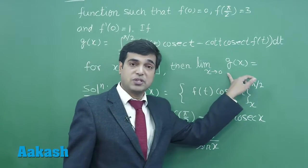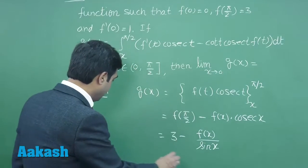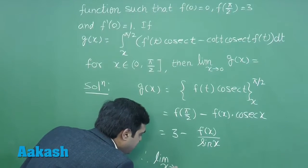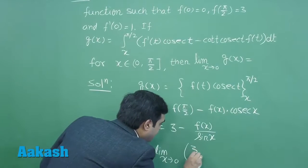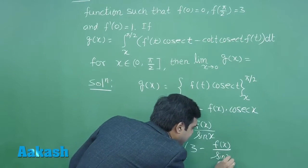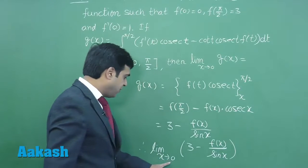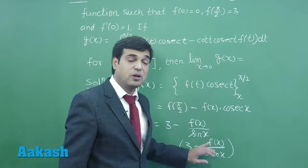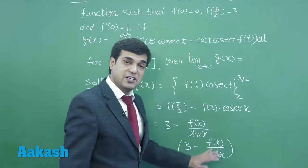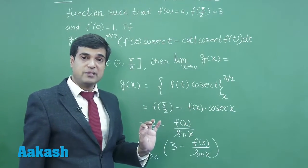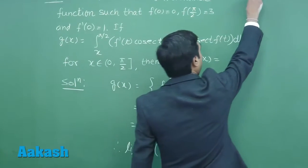For x approaching 0, let us consider this: lim(x→0) [3 - f(x)/sin(x)]. When we try to substitute x=0, we find f(0)/sin(0), so the approaching value is indeterminate because f(0) is given to us as 0. We obtain 0/0 form. Applying L'Hôpital's rule, we get